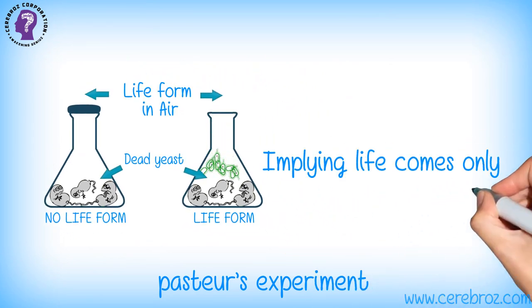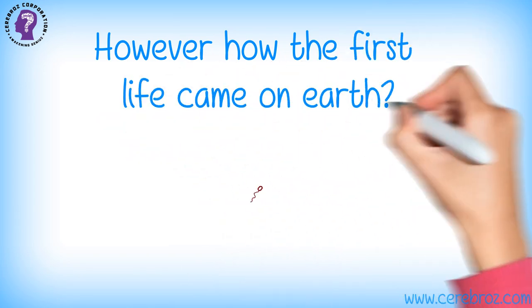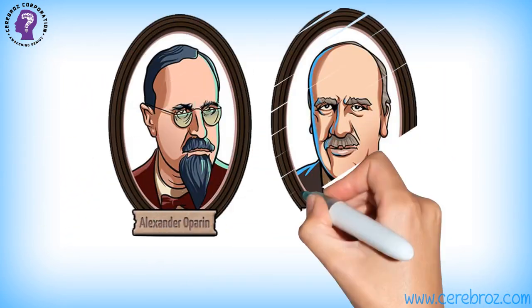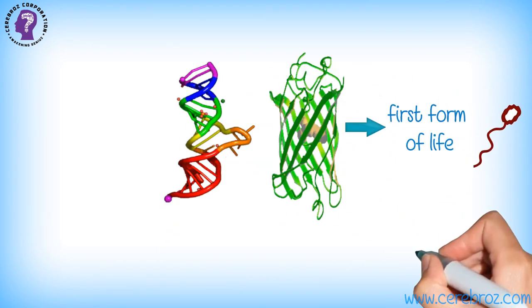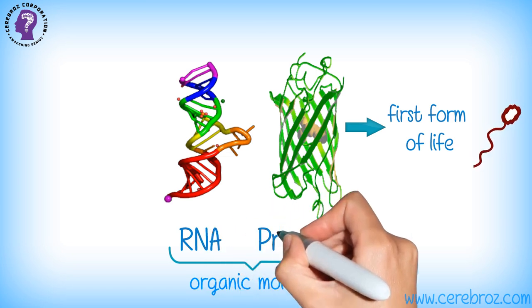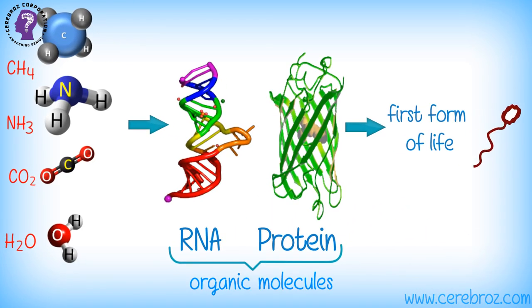Implying life comes only from pre-existing life. However, how did the first life come on Earth? Oparin and Haldane proposed that first forms of life could have come from pre-existing non-living organic molecules like RNA and protein, after chemical evolution in which organic molecules formed from inorganic constituents.